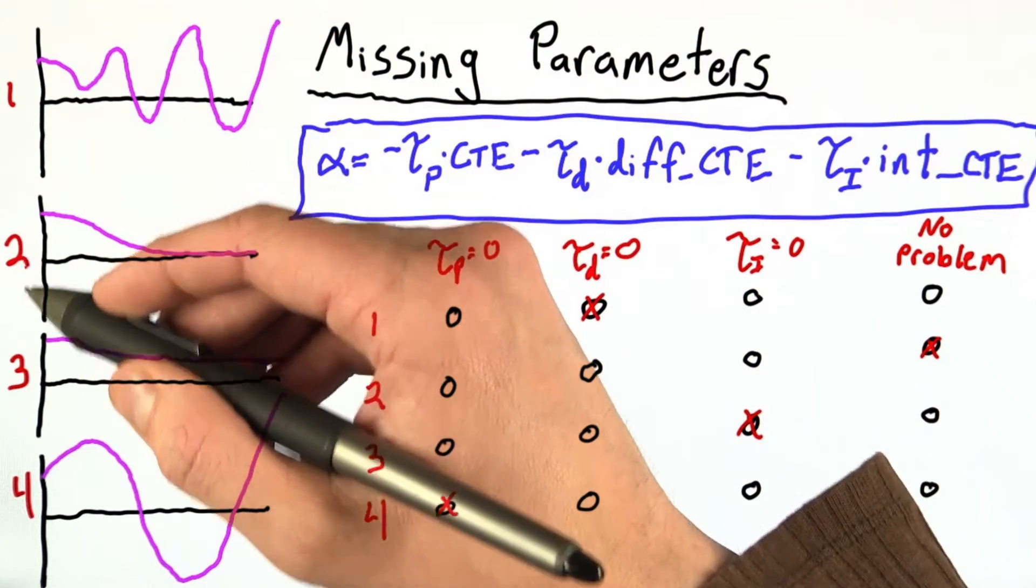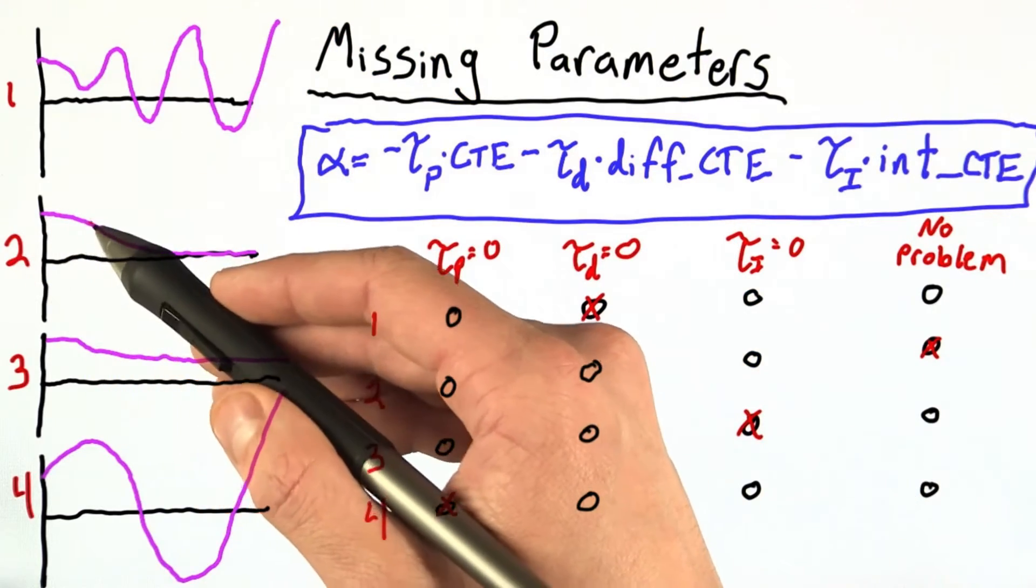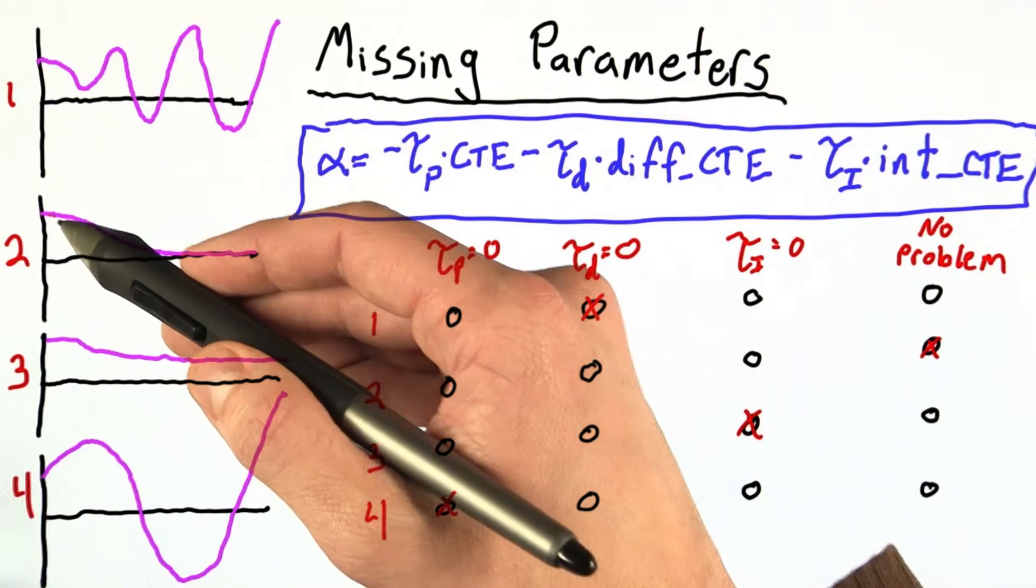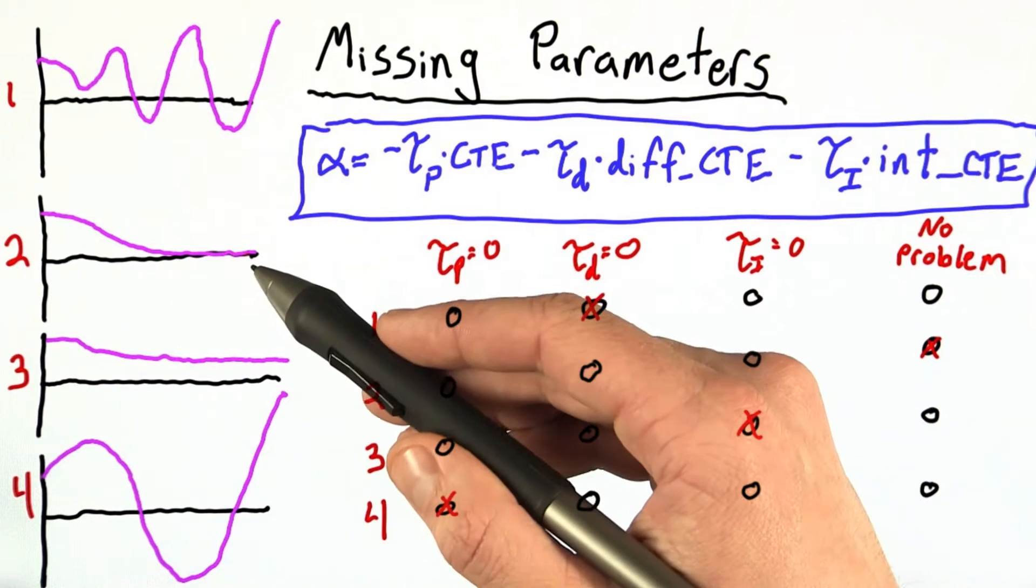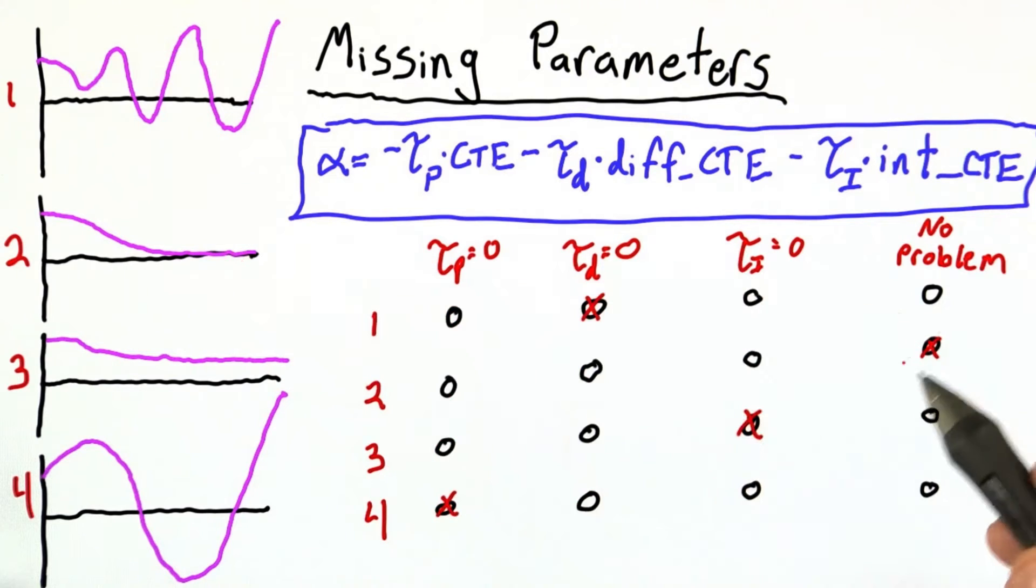Let's start with number 2. Pretty straightforward, the robot does exactly what we want. It starts off away from the track, then it approaches it, and stays right on the track. That's exactly what we want PID to do, so this is no problem.